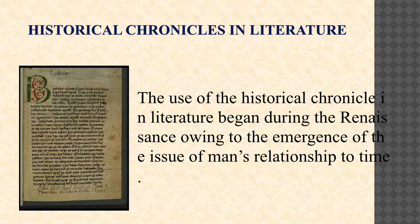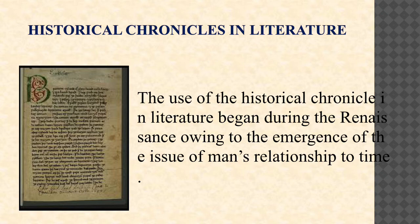Chronicles are much more comprehensive than a simple timeline, as they provide details and information about events rather than just the time and order in which they happened. They help record the histories of all aspects of human life: politics, religion, weather, law, fashion, and language. Nearly any topic can be chronicled. The way in which chronicles report information is objective, orderly, and accurate, and therefore reliable. The use of the historical chronicle in literature began during the Renaissance, owing to the emergence of the issue of man's relationship to time. The concept of time was replacing the classical concept of faith and the medieval concept of God.